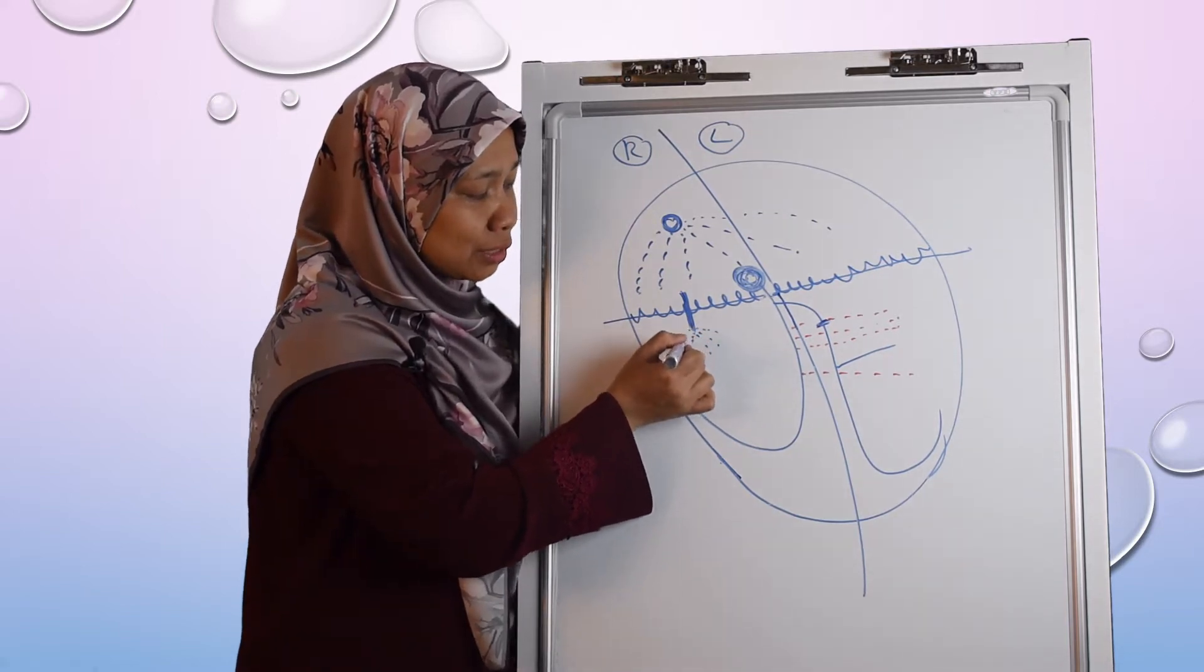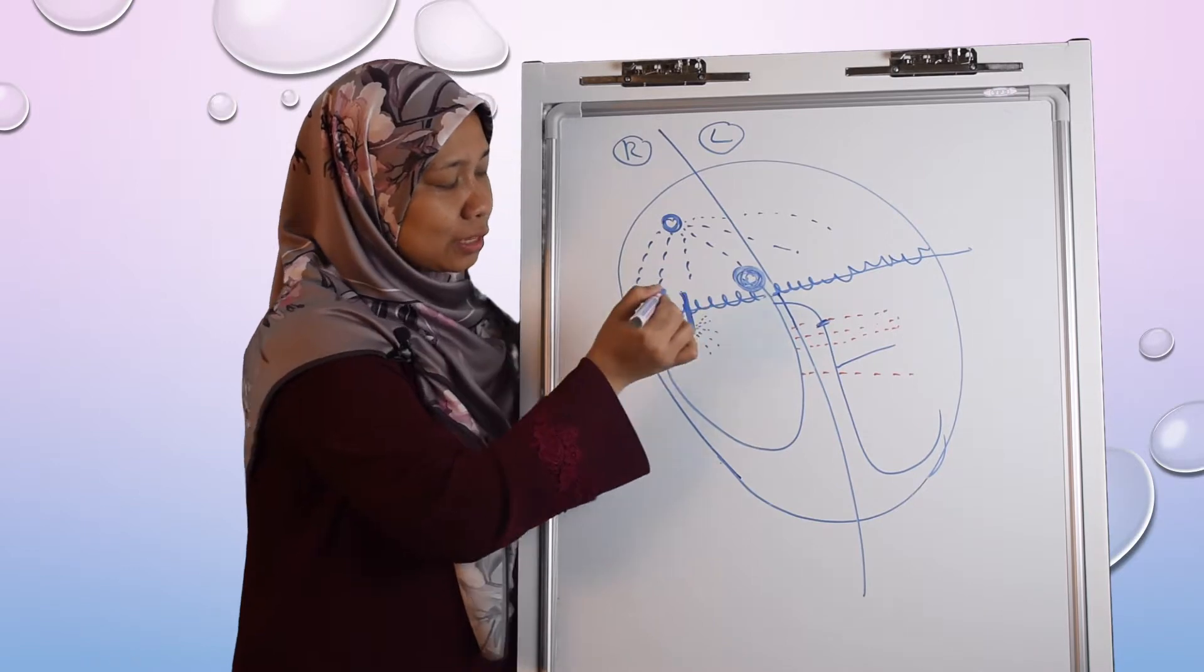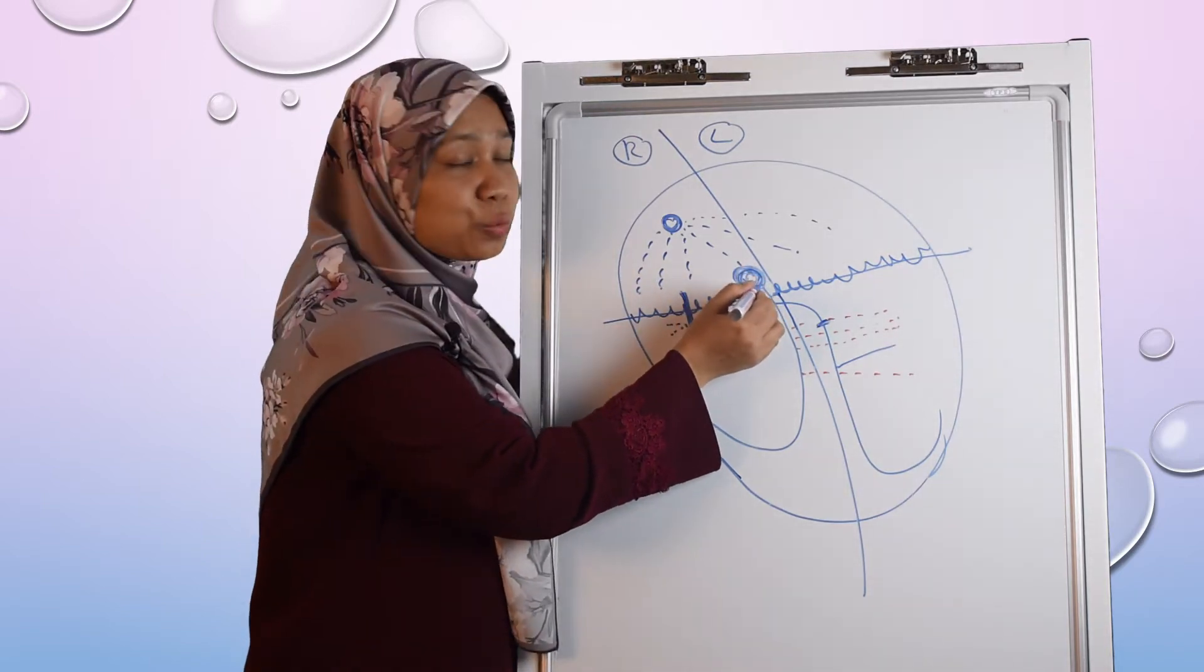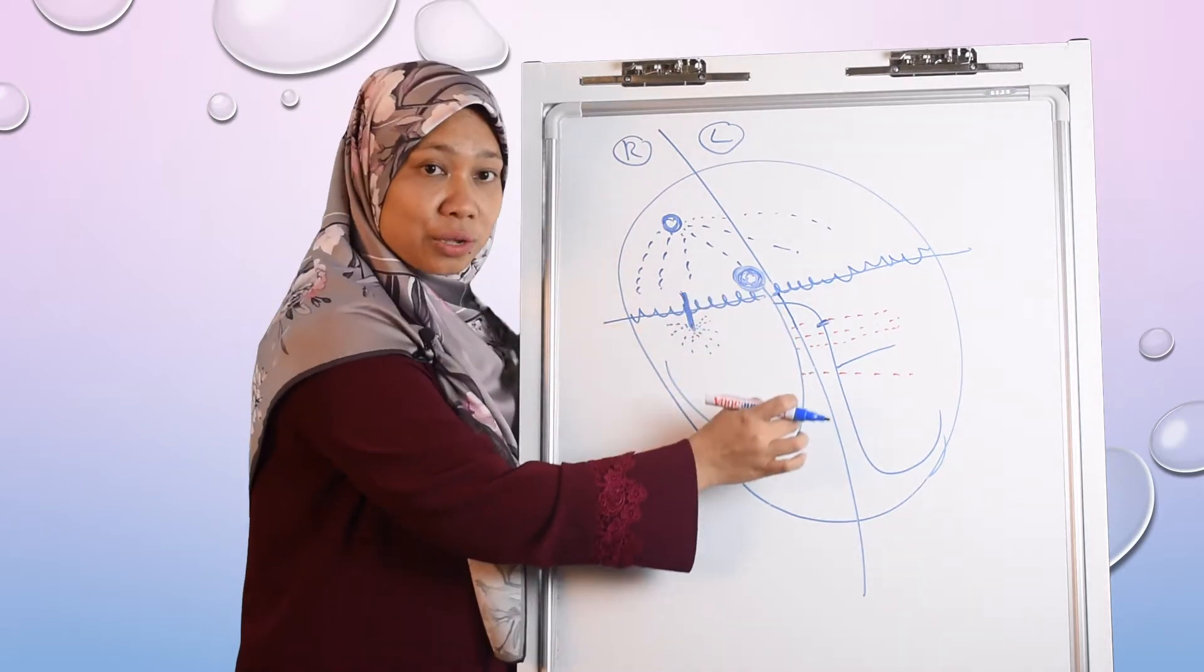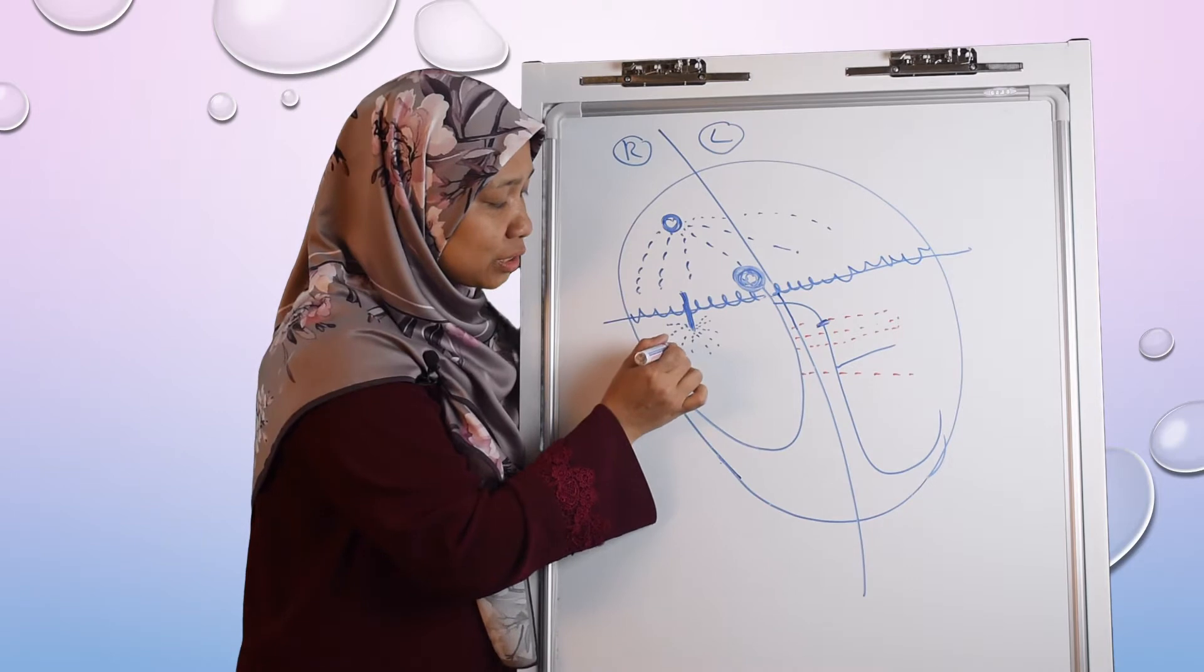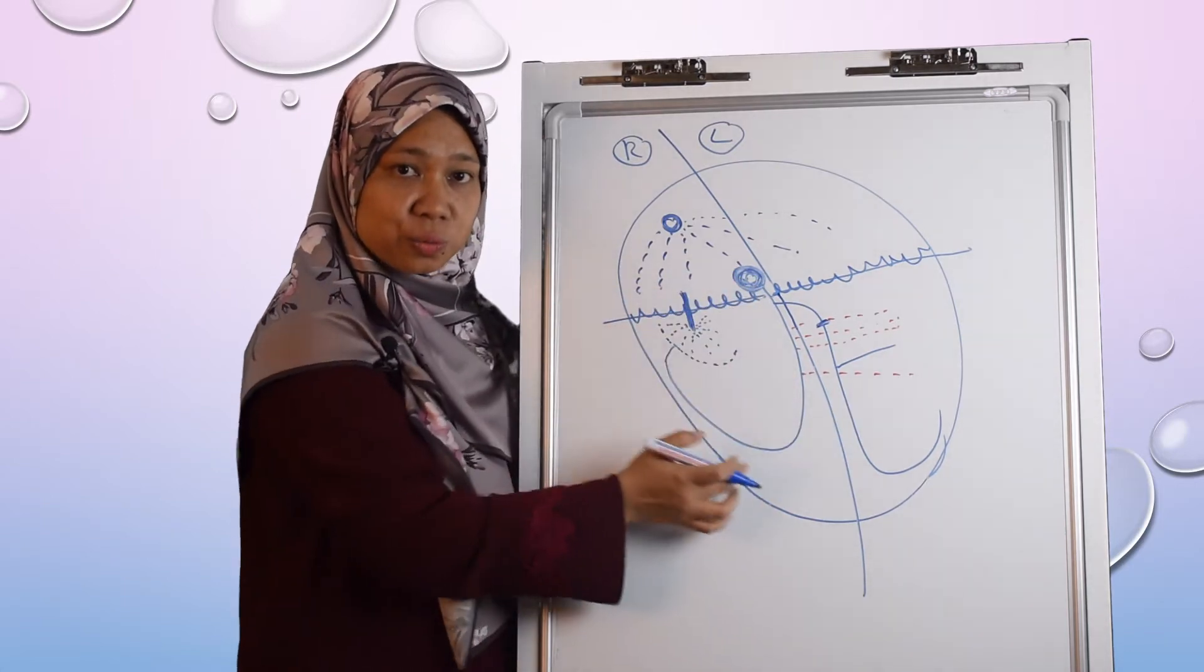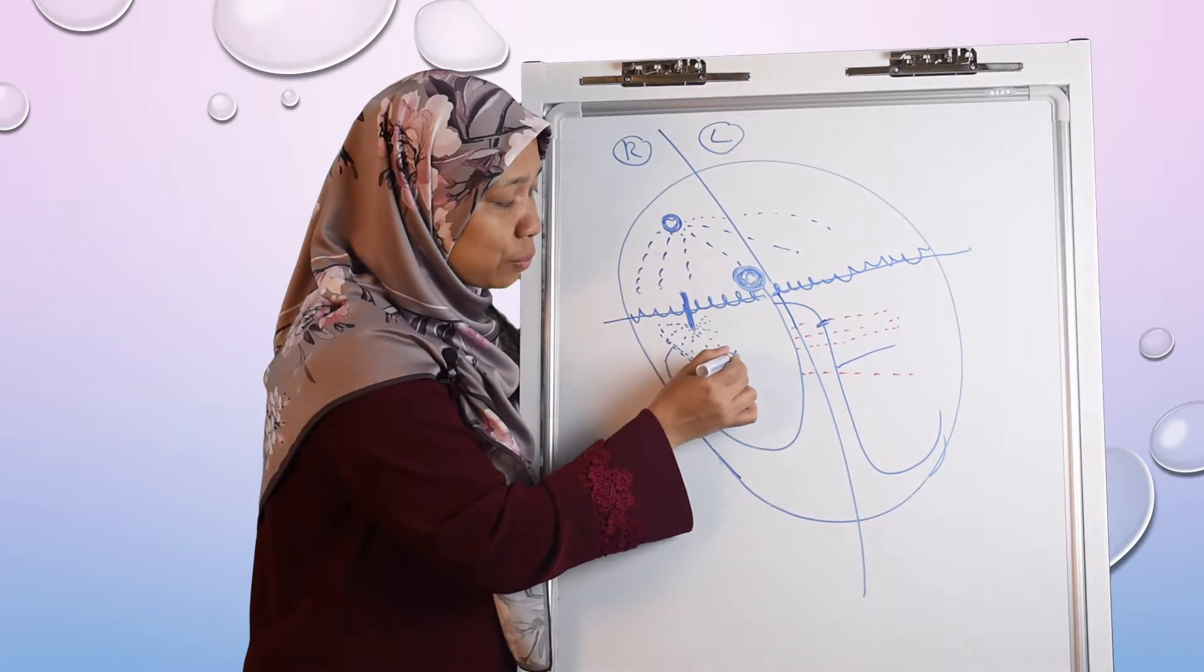So this nearby muscle will start depolarizing, and then if the AV node is functioning normally, after a while the AV node will release the impulse to the ventricle. Because it used the highway it will go here very fast and reach this area. So what happens is this area will be depolarized by the impulse coming from the AV node, which is a normal impulse. And because of this area already depolarized,